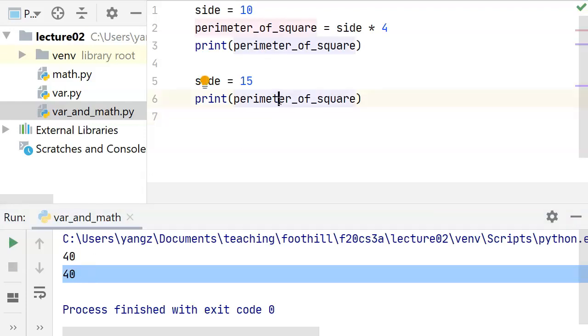So it's very important to recognize that even though we changed the side variable here, we did not change the perimeter of a square after we changed side to a different value. So perimeter_of_square, without being explicitly modified, is going to remain what it was before.